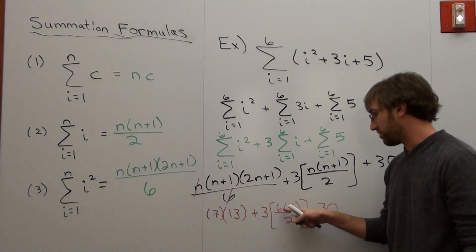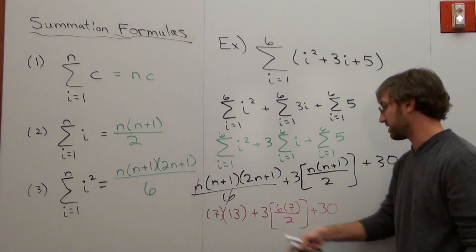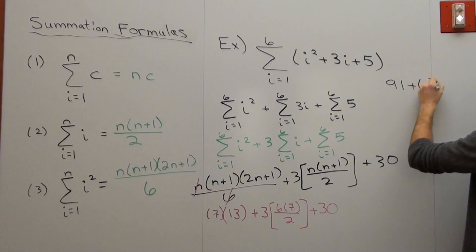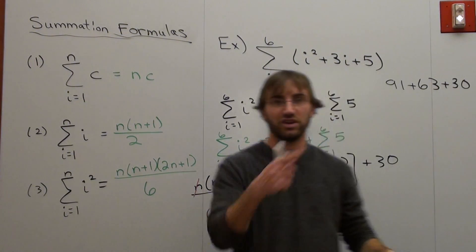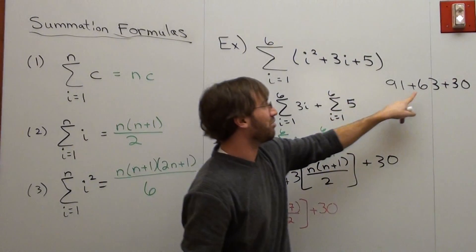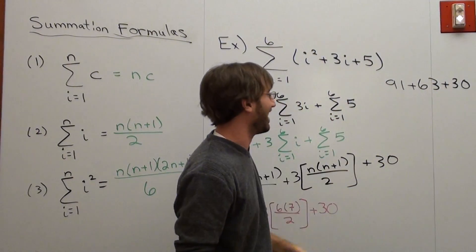Go ahead and write that there. Plus, we said this was 42 divided by 2, which is 21, times 3 is 63, plus 30. That reads 91 plus 63 plus 30.